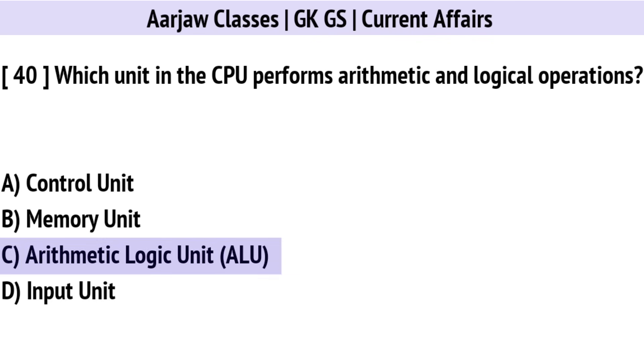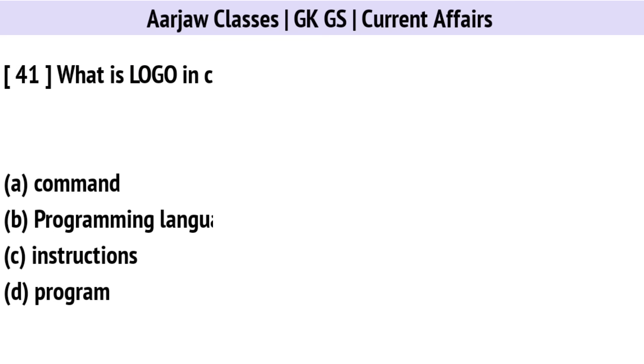Which unit in the CPU performs arithmetic and logical operations? The correct option is C: Arithmetic Logic Unit.